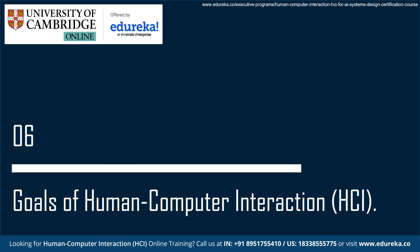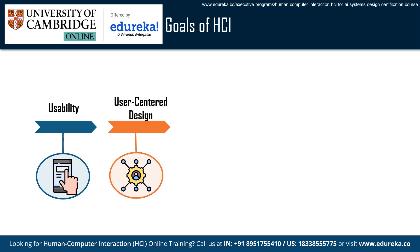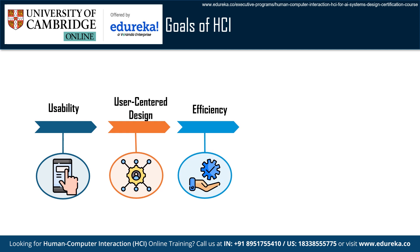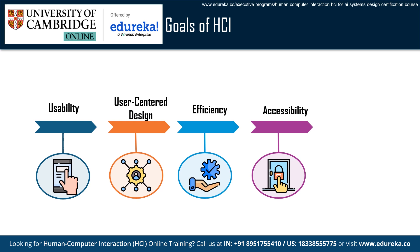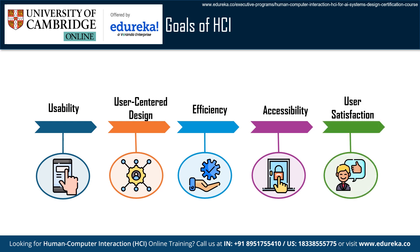The goals of human-computer interaction include: Usability — ensuring technological interfaces offer a positive user experience and are simple and easy to learn; User-centered design — prioritizing user needs and preferences throughout the design process; Efficiency — enabling users to complete tasks fast and with little effort; Accessibility — ensuring people with different abilities can use technology, encouraging inclusivity and equitable access; and User satisfaction — designing interfaces that fulfill functional specifications while also enhancing the user's emotional experience.